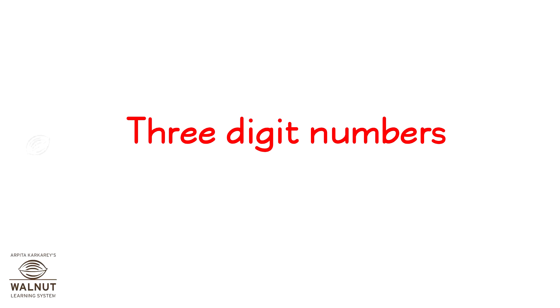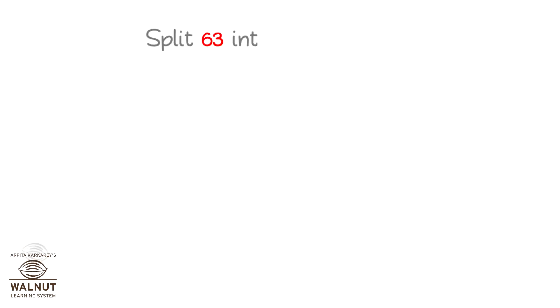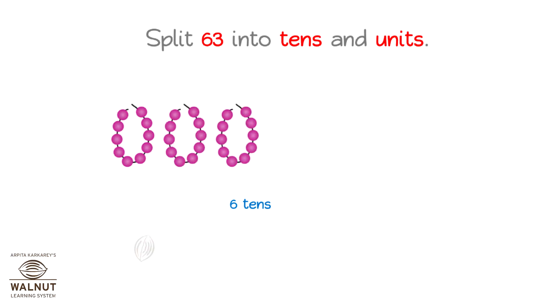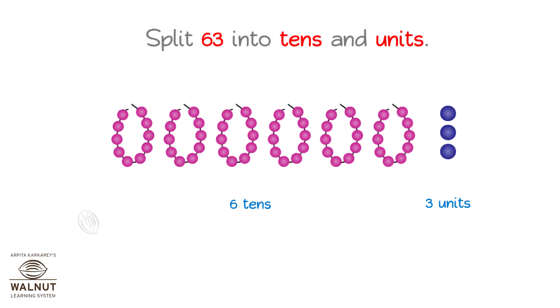3 digit numbers. Number work. You have already learnt about tens and units. So split 63 into tens and units. We have 6 tens and 3 units. That makes it 63.